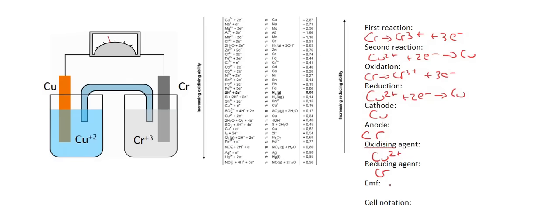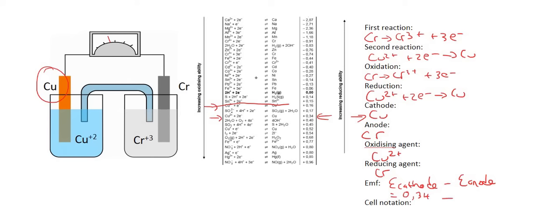We're nearly done. To work out the EMF, that's going to be E cathode minus your anode voltage. The cathode was copper, and reading that off the table, we want to use the Cu2+ one, and so that's going to be 0.34. Minus the chromium one, which is negative 0.74 — so that's going to be a double negative. If you work this out, you'd get about 1.08 volts.